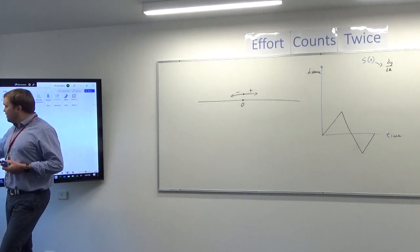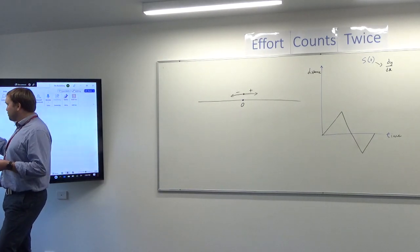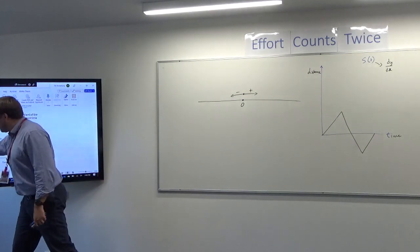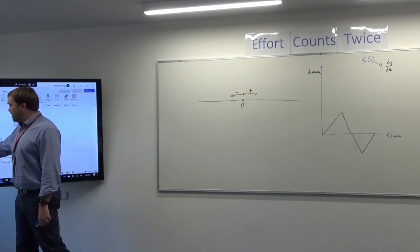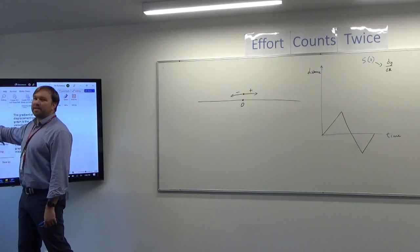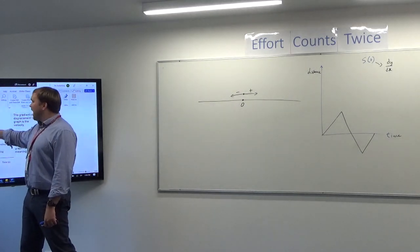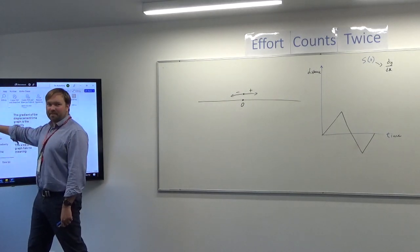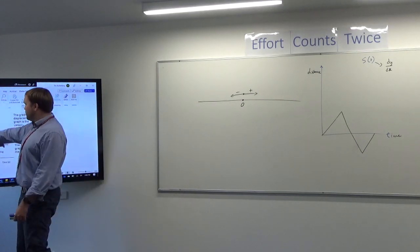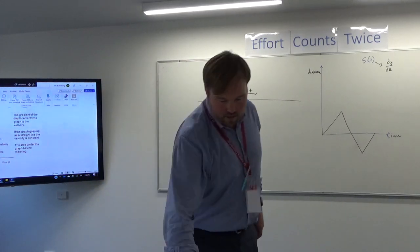Using calculus, we can tell everything about a particle's journey if we can describe its path with a function, and that's what this topic will be about. This example shows speeding up to the right, then traveling at a constant velocity to the right, slowing down but still going right, and then stopping. So this is the story of that particle moving constantly to the right but not at a constant speed.